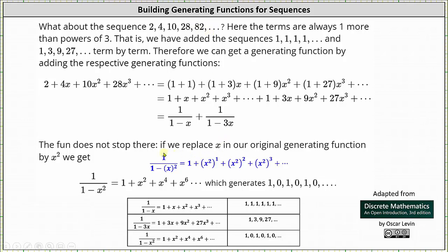The fun does not stop there. If we replace x with x squared in the original generating function for the sequence of 1s, we have 1 divided by the quantity 1 minus x squared. Replacing x with x squared in the generating series gives 1 plus x squared plus x to the fourth plus x to the sixth and so on. We need to think of this as 1 plus 0x plus 1x squared plus 0x cubed plus 1x to the fourth and so on, generating the sequence 1, 0, 1, 0, 1, 0, and so on.